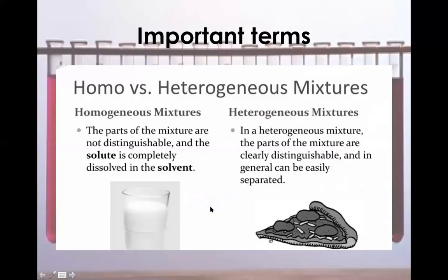Two important terminologies are homogeneous mixture and heterogeneous mixture. A homogeneous mixture is one that cannot be distinguished — the solute is completely dissolved in the solvent. For example, water mixed in milk is a homogeneous mixture; we cannot distinguish what is water and what is milk. In a heterogeneous mixture, the parts are clearly distinguishable. For example, a pizza slice — we can see the sausage, pepperoni, dough, crust, and tomato — that is a heterogeneous mixture. The composition is not the same throughout.